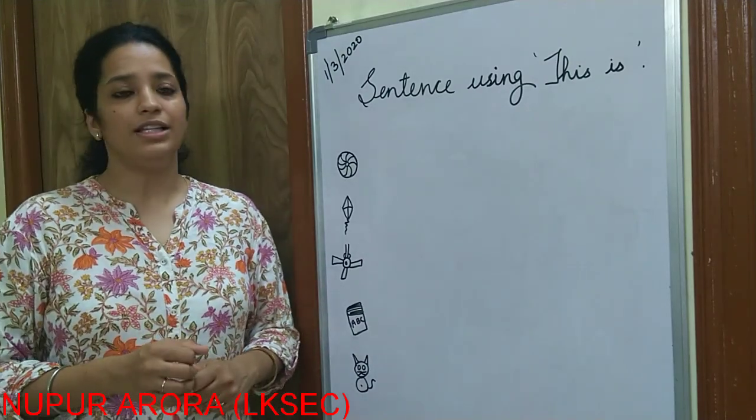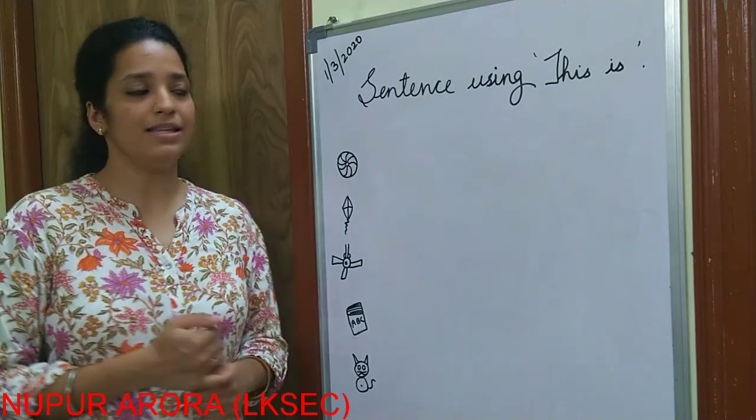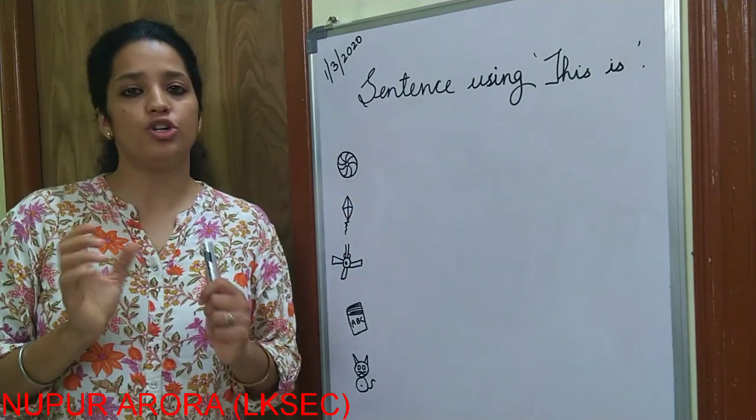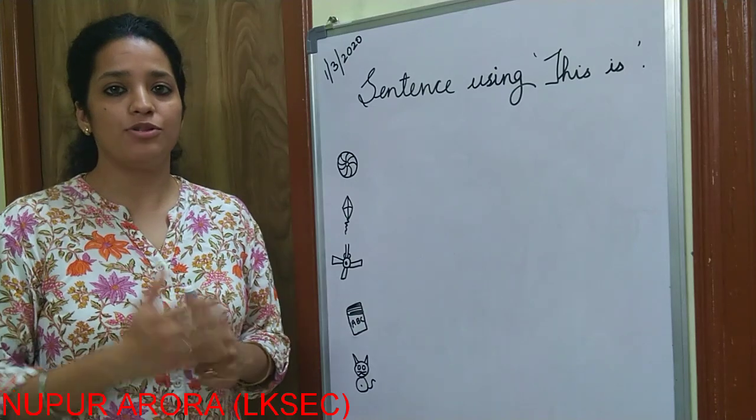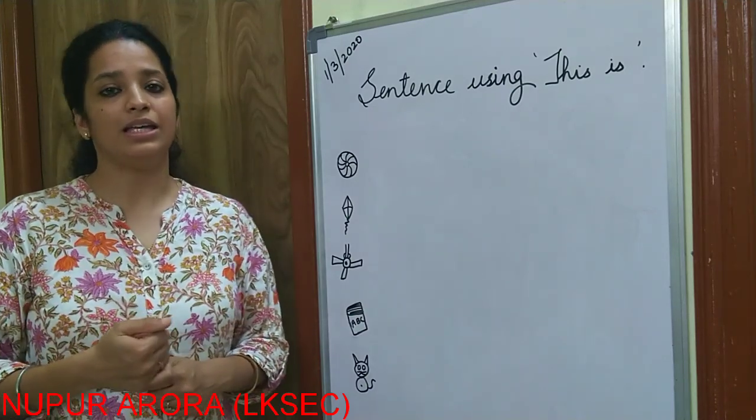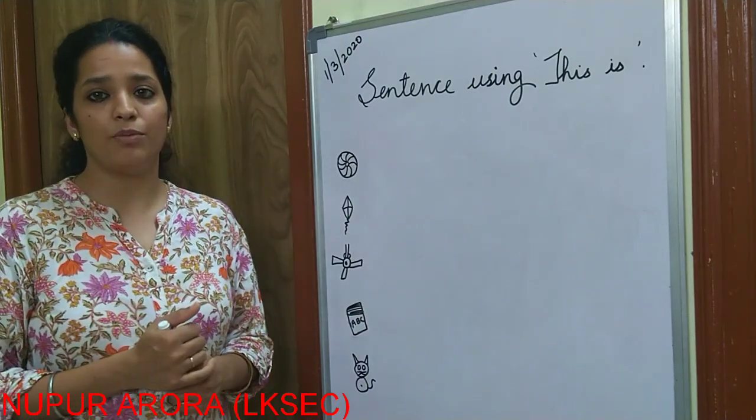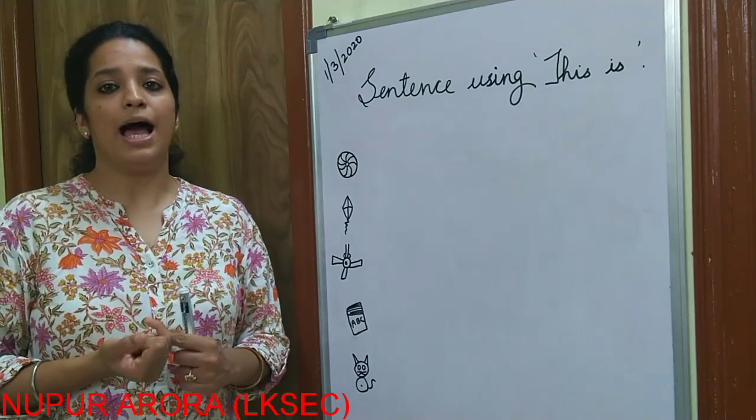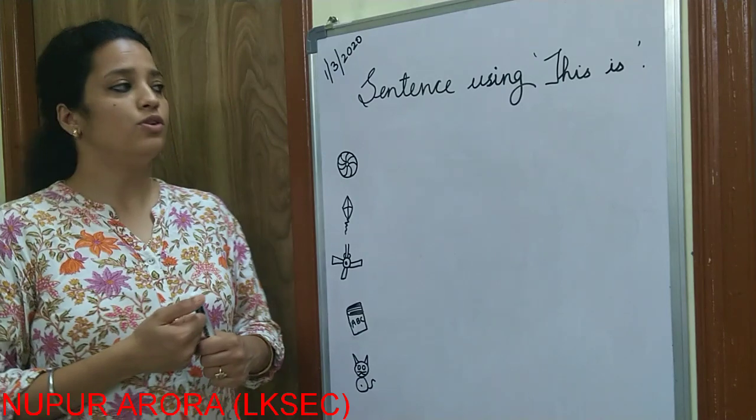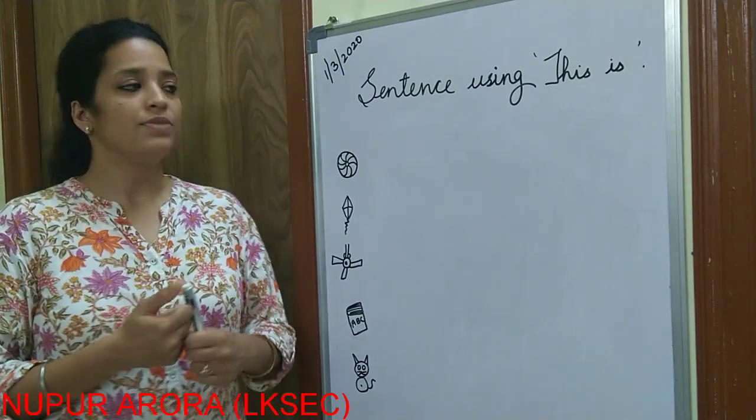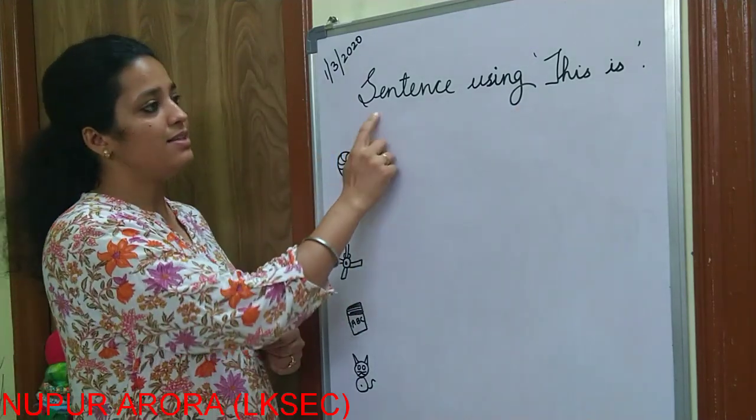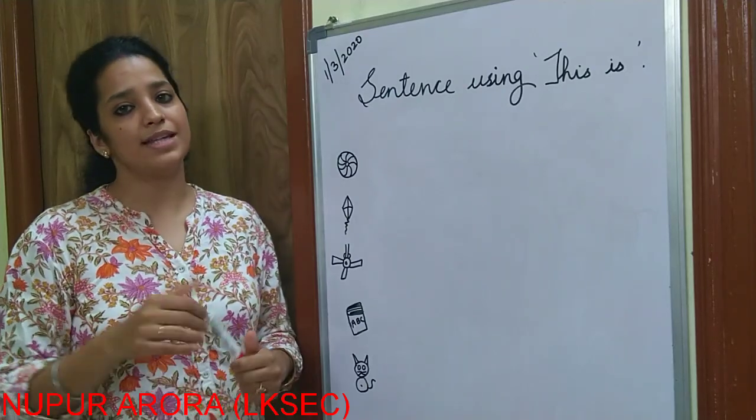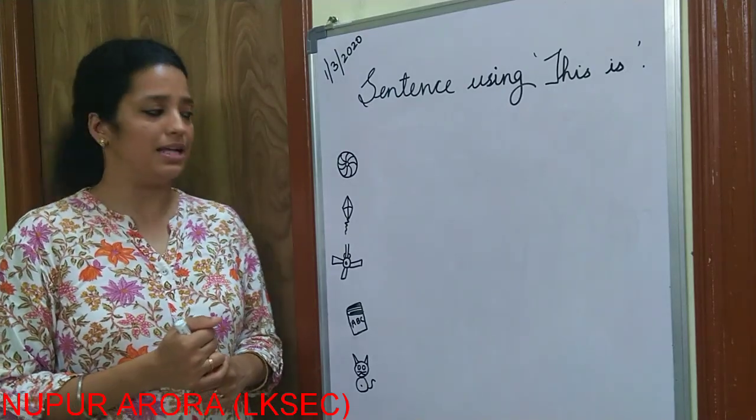So let's start with some little small sentences using this. अभी हम छोटे-छोटे sentence बनाएंगे फिर आप की reading capabilities बढ़ाएंगे, कैसे-कैसे हम reading कैसे कर सकते हैं books को, वो भी तो हमने सीखना है. हमने Hindi reading शुरू कर दी है, अब हम English reading भी करेंगे. So for that we have to use this sentence using this, हम इससे स्टार्ट करेंगे अपने sentences बनाना.